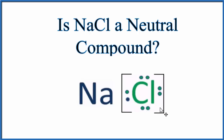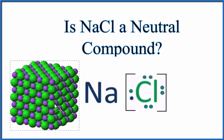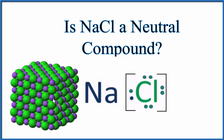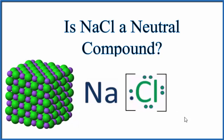One last thing: when we have NaCl, it doesn't really exist as just one Na and one Cl. It's actually going to be in a crystal — a regularly repeating pattern of sodium and chlorine atoms. Because of that, we call this a formula unit. But this whole crystal will be neutral as well, because it's made up of the same number of positive and negative charges.